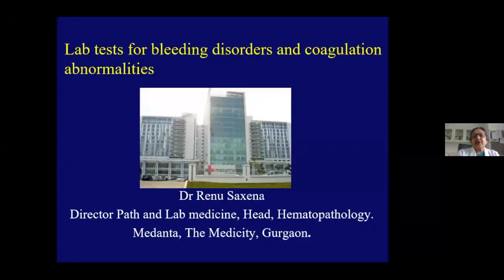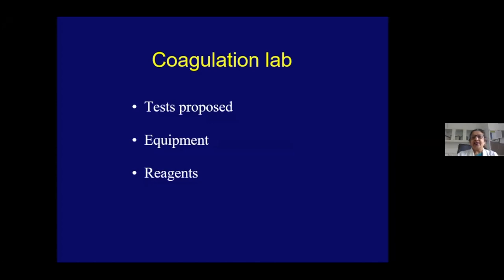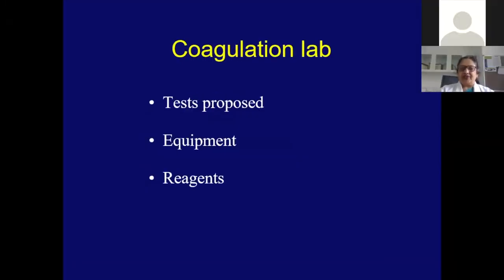At the outset, I would like to thank the organizers for inviting me to this webinar to give my talk on lab tests for bleeding disorders and coagulation abnormalities. This is a very important part of hematology because we get not only inherited but also acquired bleeding and coagulation abnormalities. We need to know what tests have to be done and how to equip the lab and interpret the results.